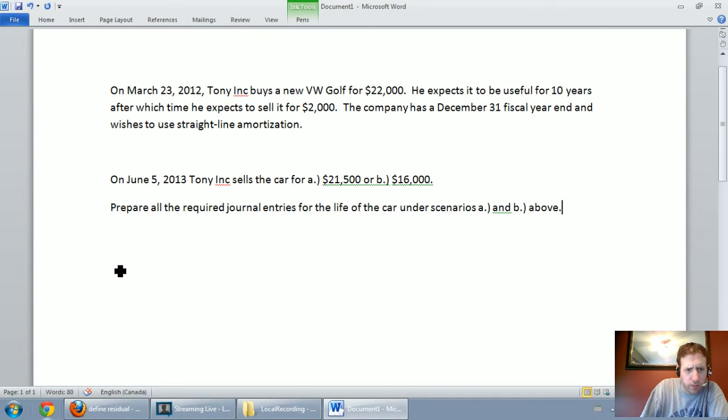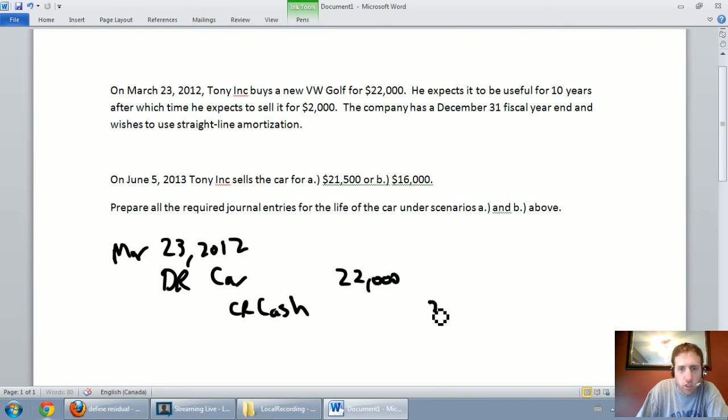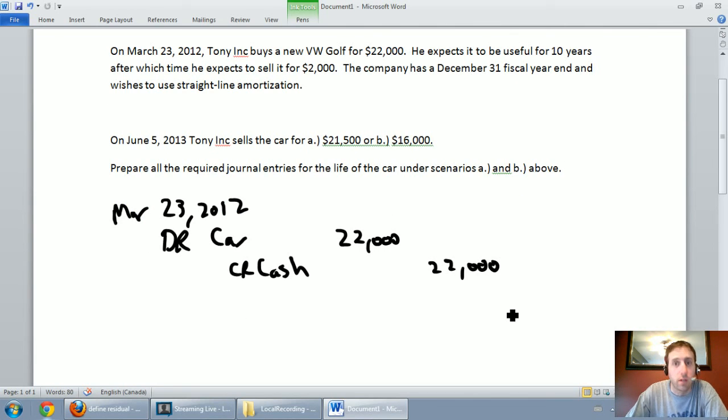On June 5th, 2013, Tony Inc. sells the car for A) $21,500 or B) $16,000. Prepare all the required journal entries for the life of the car under scenarios A and B. So we're going to buy a car, we're going to amortize it for a little while and then we're going to sell that car. The first thing we've got to do is buy the car.